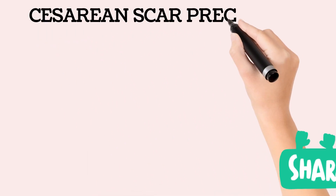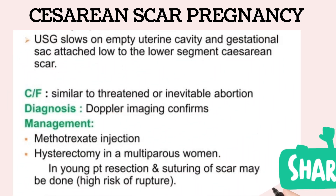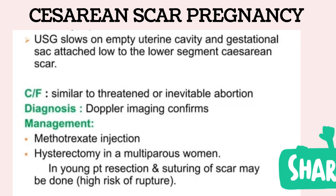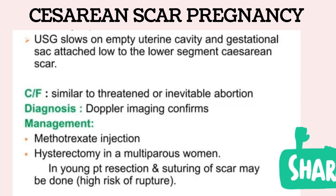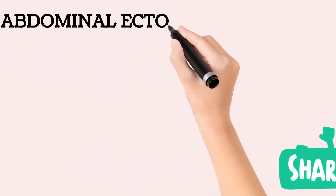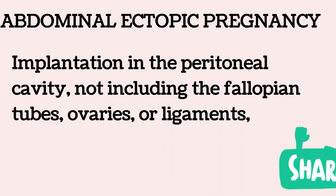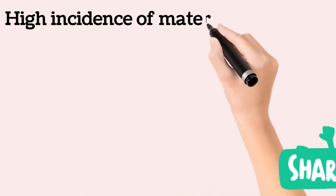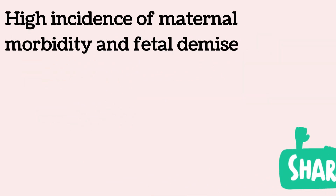Caesarean scar pregnancy occurs when the gestational sac implants in the uterine scar defect at the site of a previous caesarean delivery. It has a high complication rate, with increased risk for early uterine rupture and severe hemorrhage at delivery. Growth into the myometrium may lead to rupture and bleeding in the first trimester. Prompt surgical intervention is preferred over medical management. Abdominal pregnancy is defined as implantation in the peritoneal cavity, excluding the fallopian tubes, ovaries, or ligaments, and is associated with high maternal morbidity and fetal demise.